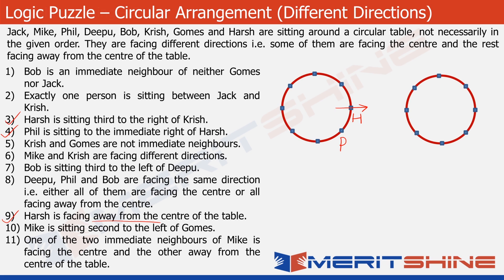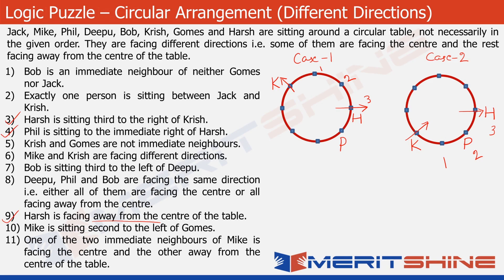Let's call this Case 1 and this one Case 2, and first put Harsh and Phil in both structures. In Case 1, Krish is facing outside, away from the centre of the table — and if we count from Krish, Harsh is at the third position: 1, 2, 3. In Case 2, Krish is at a different position and is facing inside, towards the centre. Again, Harsh is the third person to the right of Krish in both cases.